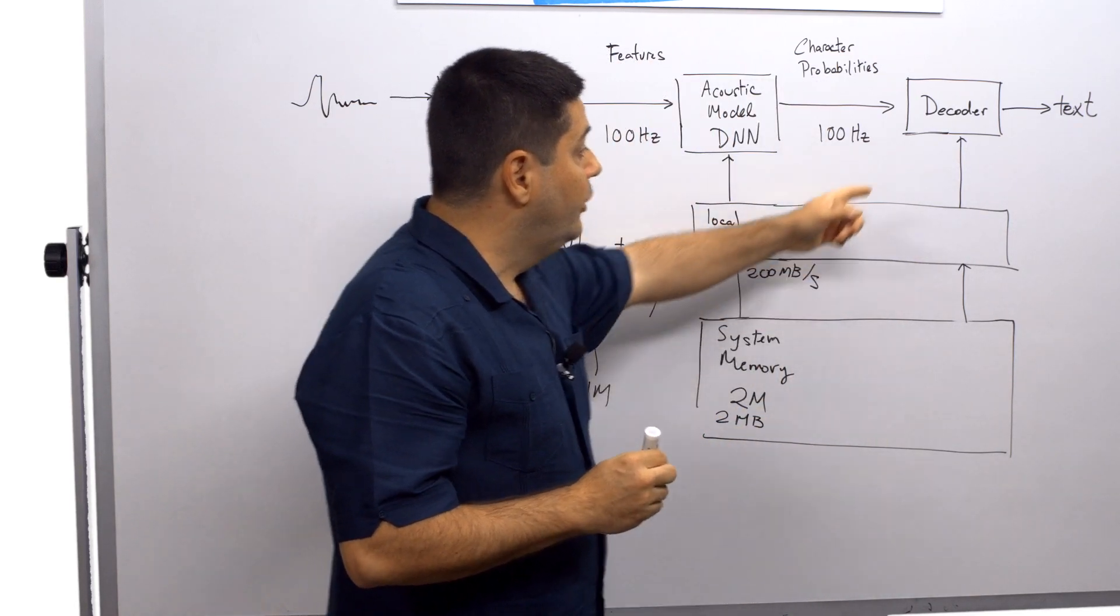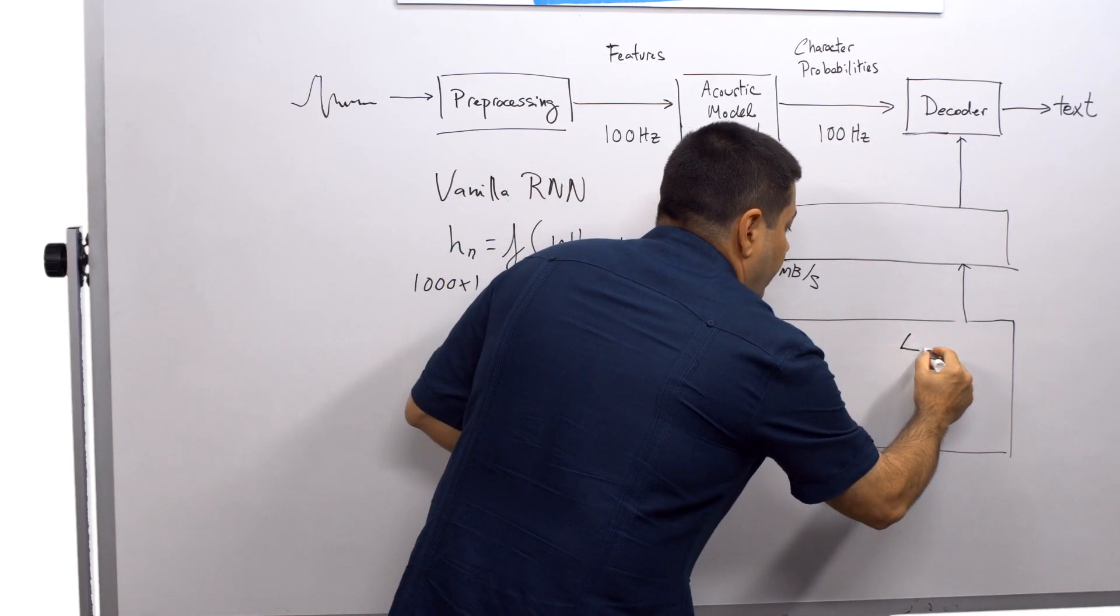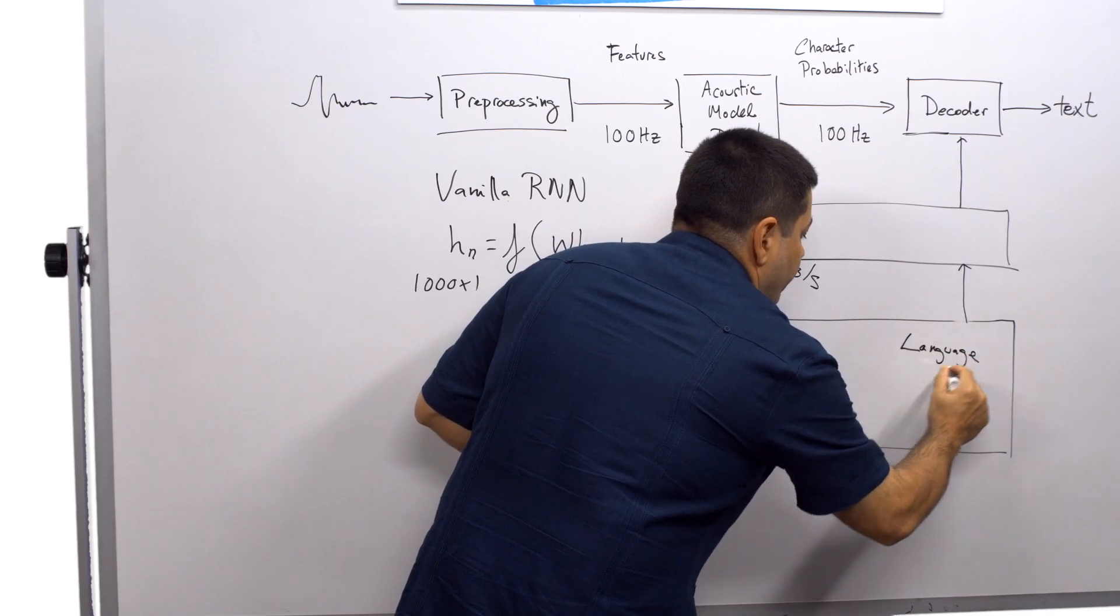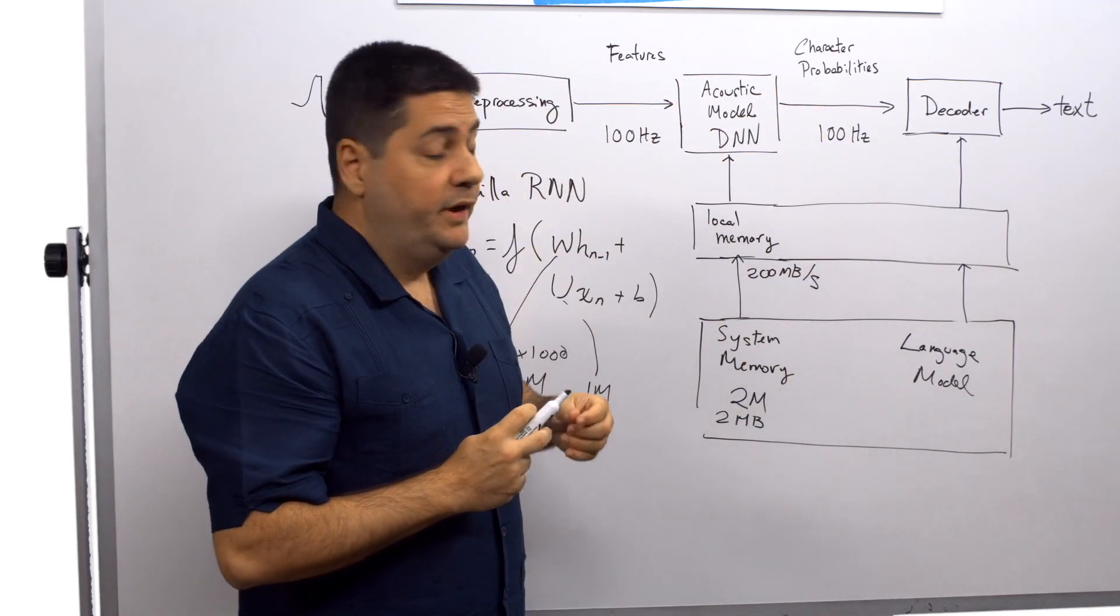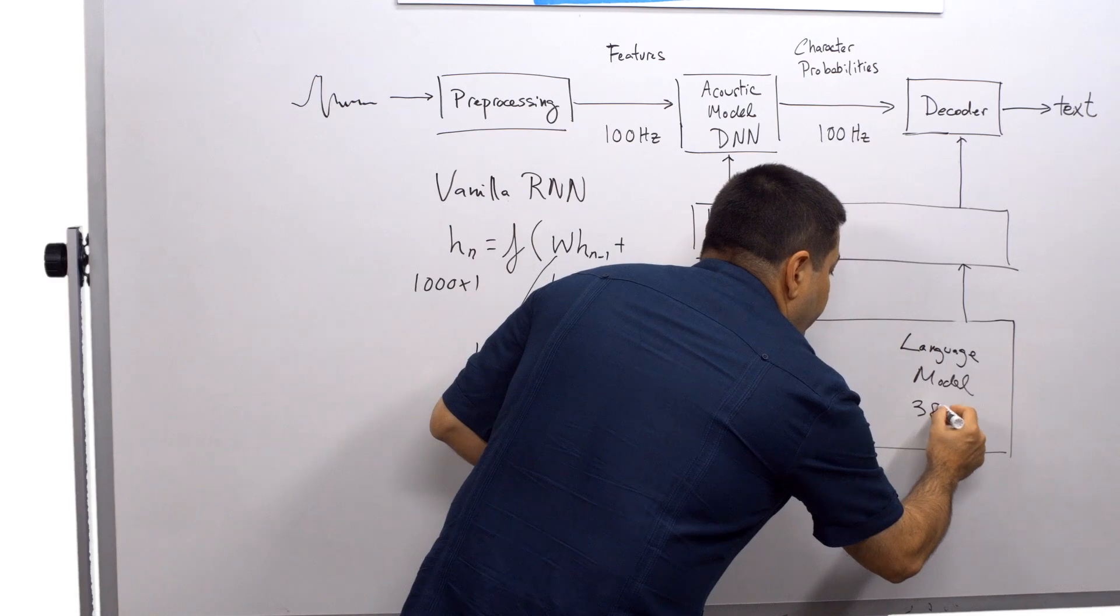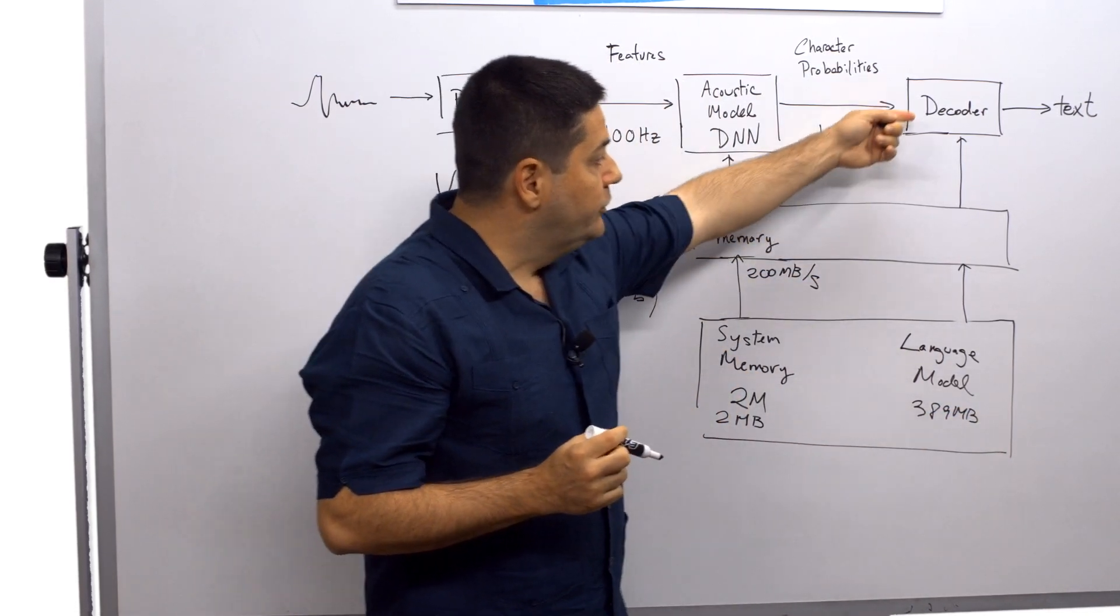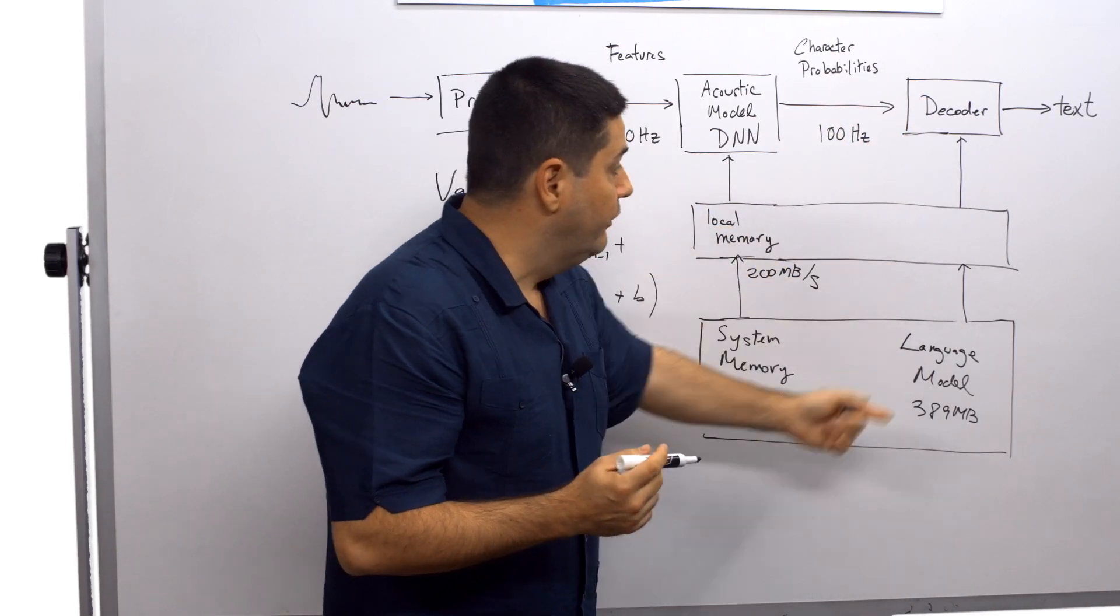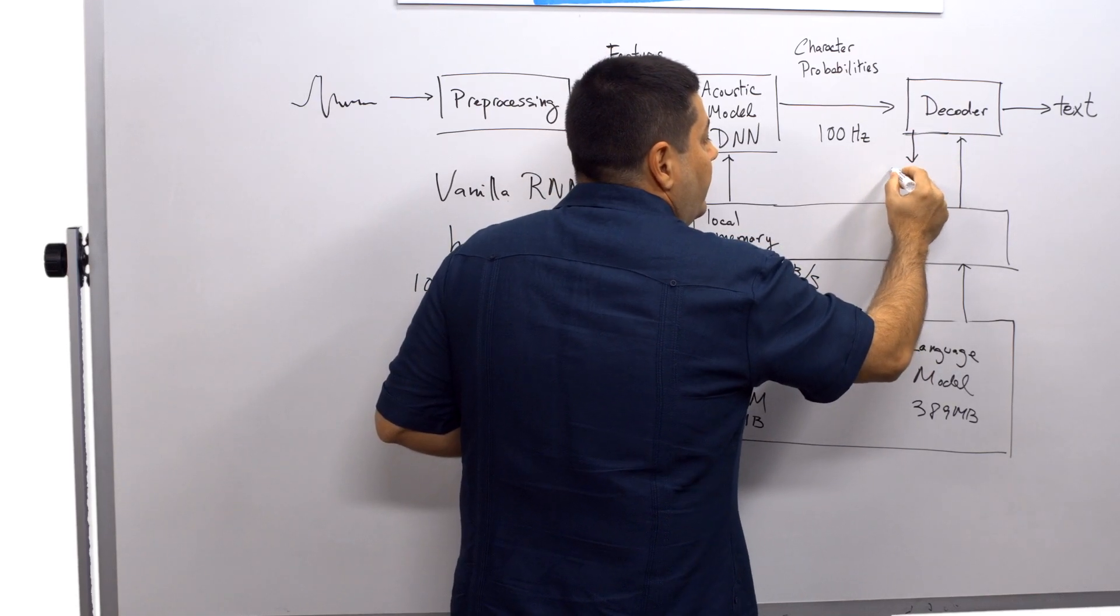So again, here, the decoder relies on a language model that sits in here in system memory. For the example we've picked, we can have a model that has up to 389 megabytes of data. And the way the decoder works is it generates a small phrase that it tests against the language model and sends in an address through a hash function.